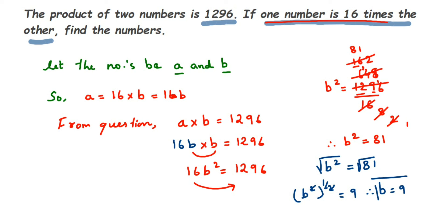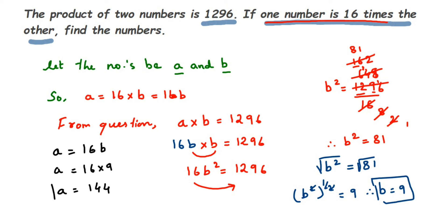Now that b equals 9, we can find the value of a. We know that a is 16 times b, so a equals 16 multiplied by 9, which gives a equals 144.